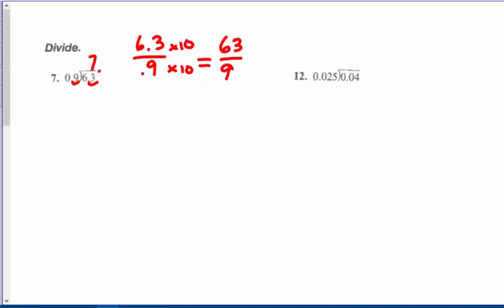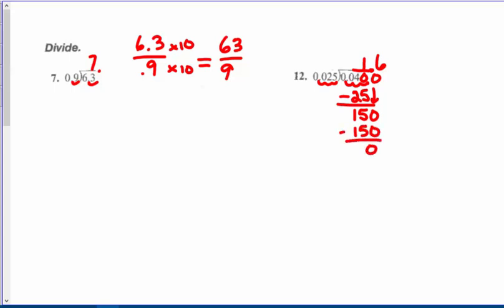0.04 divided by 0.025: move three places, annex a zero. Put your decimal up in your quotient. 25 goes into 40 approximately once — we get 25, subtract to get 15, annex a zero and bring it down. 25 goes into 150 six times, remainder zero. Our answer is 1.6.